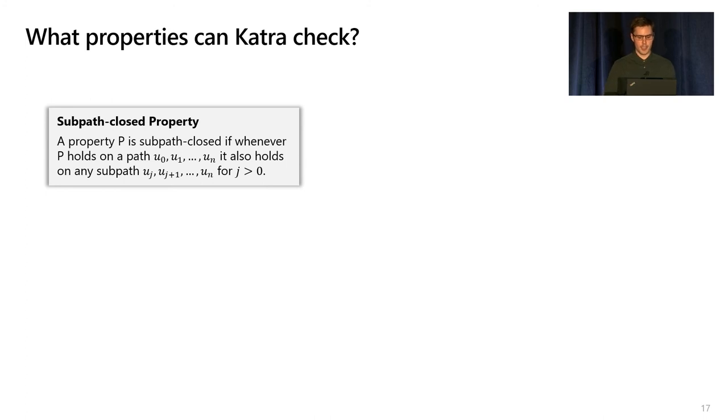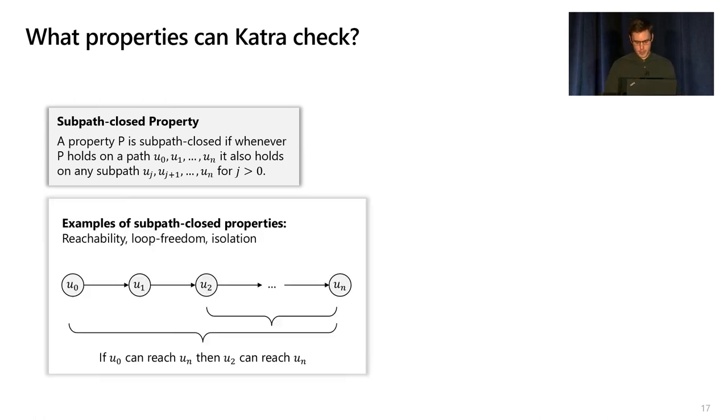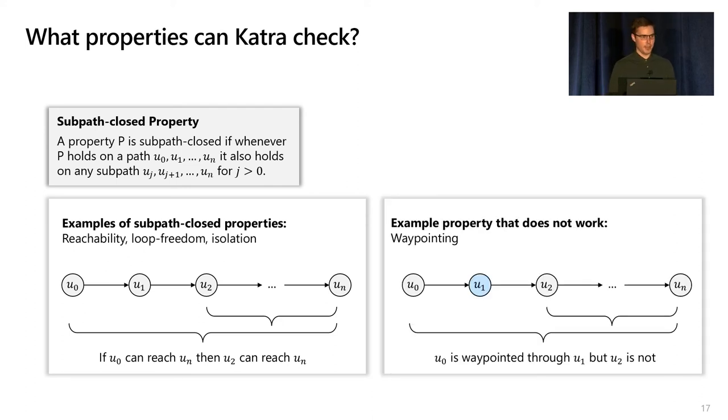In terms of expressiveness with Katra, we focus on a property that we call a subpath closed property. This is a property where if the property holds on a path ending at a node, it holds on any subpath ending at that same node. For example, reachability, loop freedom, and non-reachability are all examples of subpath closed properties. An example that's not a subpath closed property would be something like waypointing, where just because one node is waypointed through another node, it doesn't mean another node in that path is also waypointed through that node.